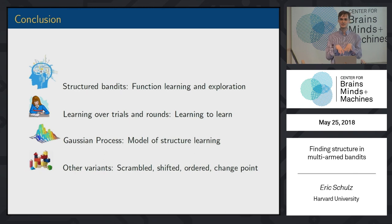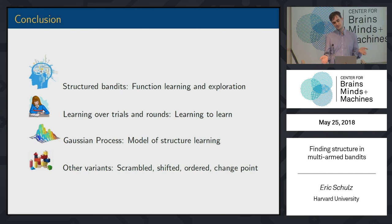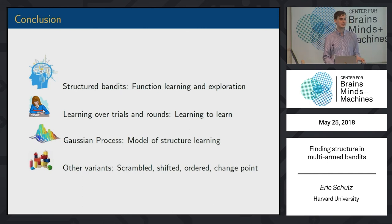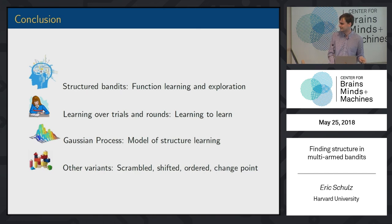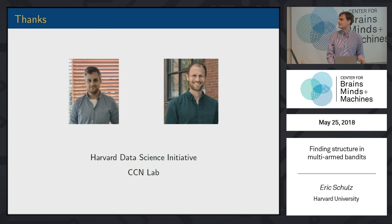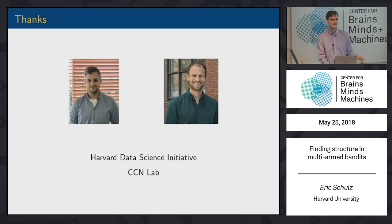We also shift the rewards on every trial — they still pick up on structure. We change the order of structured and random rounds — turns out people benefit if structure comes first. And we also have all different structures together, including a change point function, and they pick up on that quite nicely. Thanks to Nick and thanks to the Harvard Data Science Initiative and to you all.